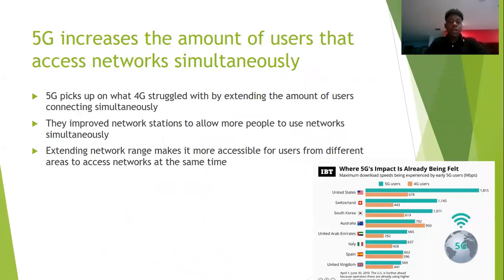Another big issue that 5G fixes is that it increases the amount of users that can access networks simultaneously. Often in the past, users would try to access networks in areas with a large population at the same time. But 5G addresses this issue by increasing network range and improving network speeds to provide for this ability.